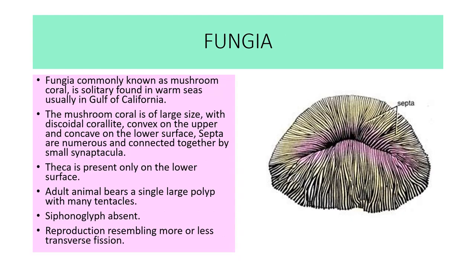Next example is Fungia, commonly known as mushroom coral. It is solitary, found in warm seas — usually in the Gulf of California. The mushroom coral is large, with a discoidal corallite convex on the upper and concave on the lower surface. Numerous septa connect together by synapticulae. Theca is present only at the lower surface. The adult animal bears a single large polyp with many tentacles. Siphonoglyph is absent. Reproduction occurs more or less by transverse fission.